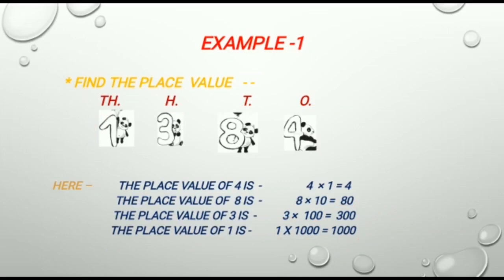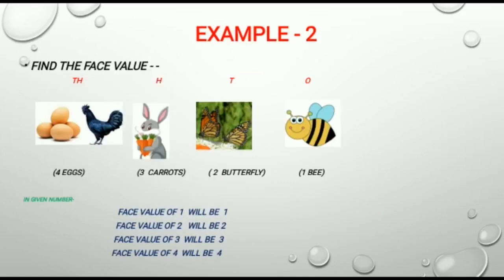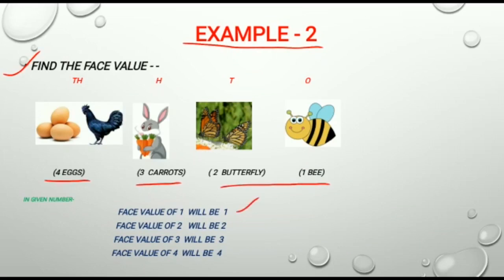Let us see another example. Example 2: Find the place value of the digits in 4321. In the given number, the place value of 1 will be 1.